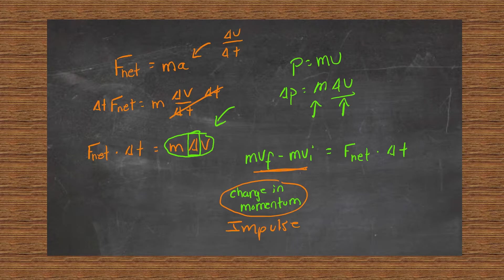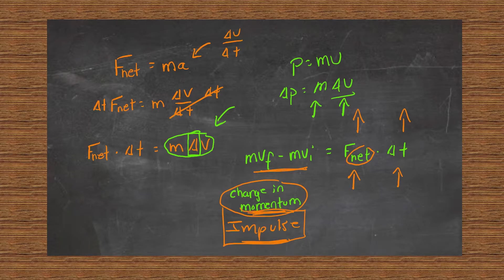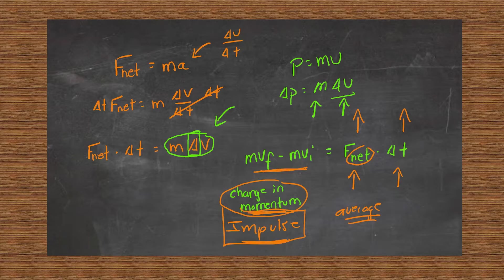What causes a change in momentum, or what an impulse is, is applying a force over a certain amount of time. The bigger the force or the bigger the amount of time, the larger the change in momentum or the larger the impulse. In a collision where there's an impulse, the force might change throughout — it happens very fast and might not be consistent. We're going to use the average force during the time of that collision.